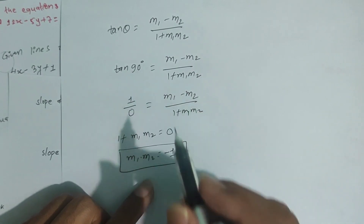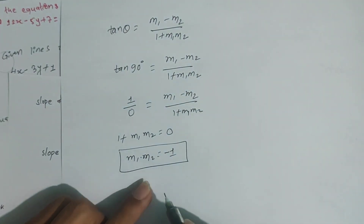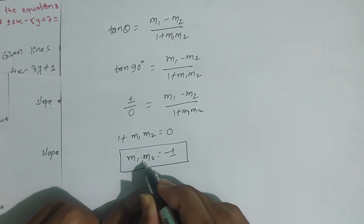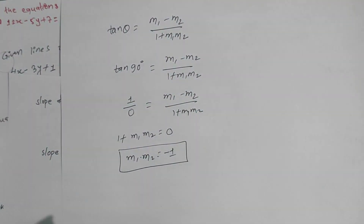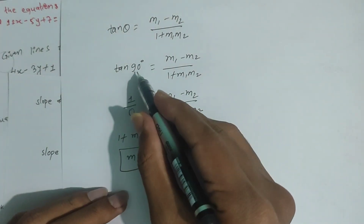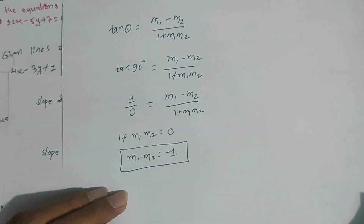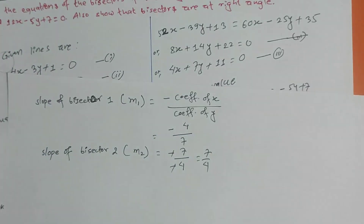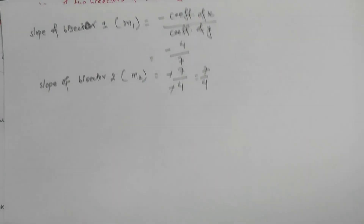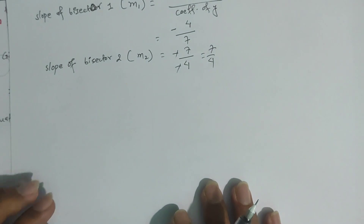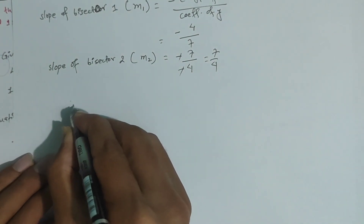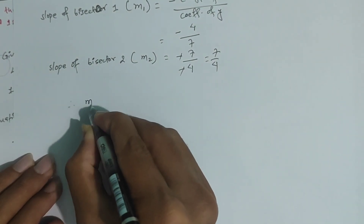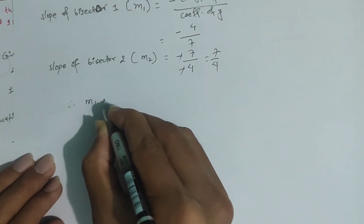So the right angle is confirmed by m1 times m2 equals negative 1. Therefore, the angle between the two bisectors is 90 degrees — a right angle — and this is proved.